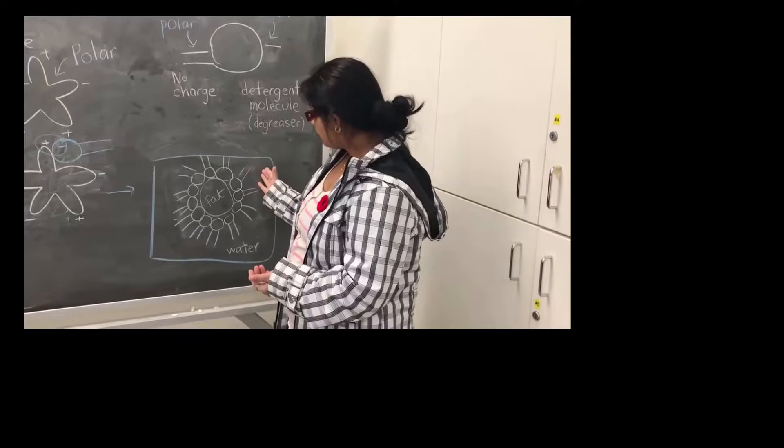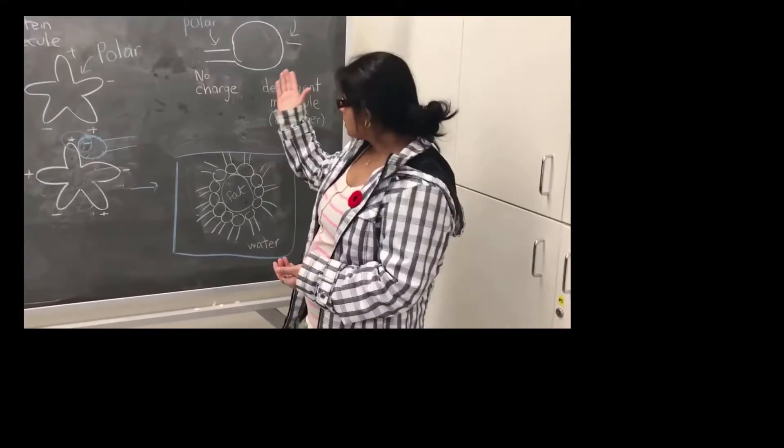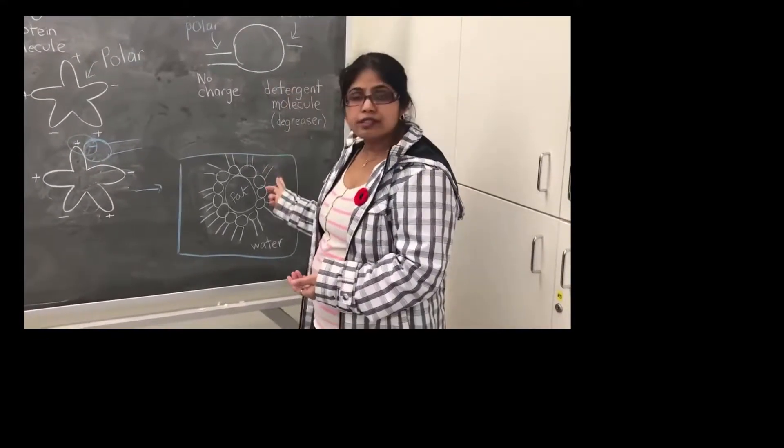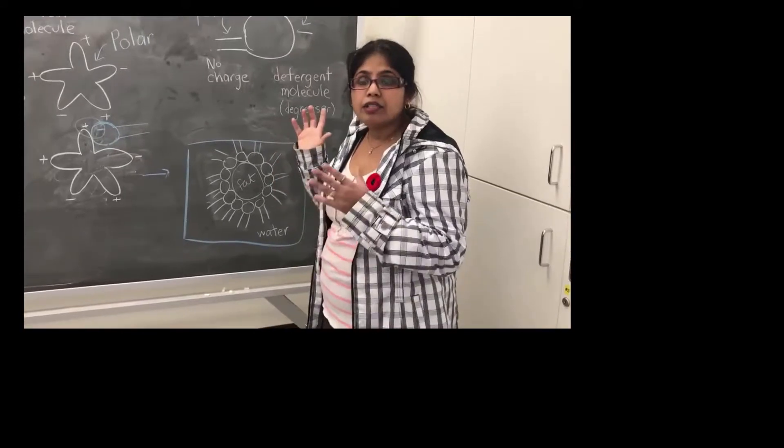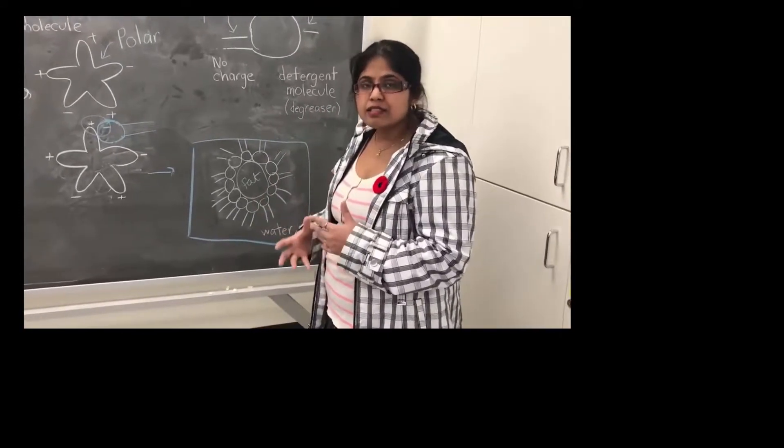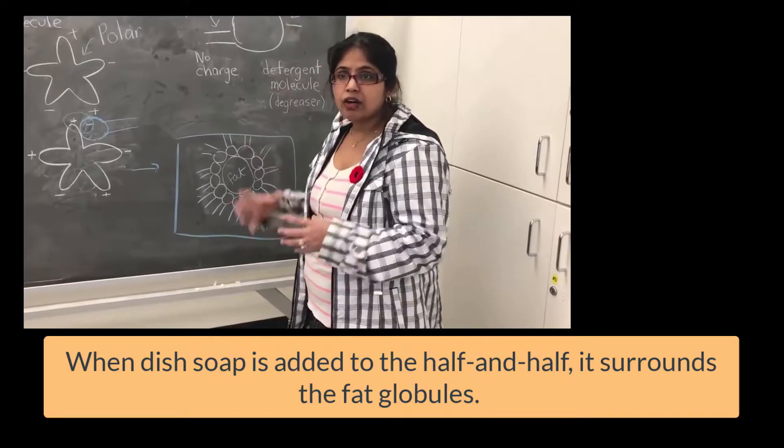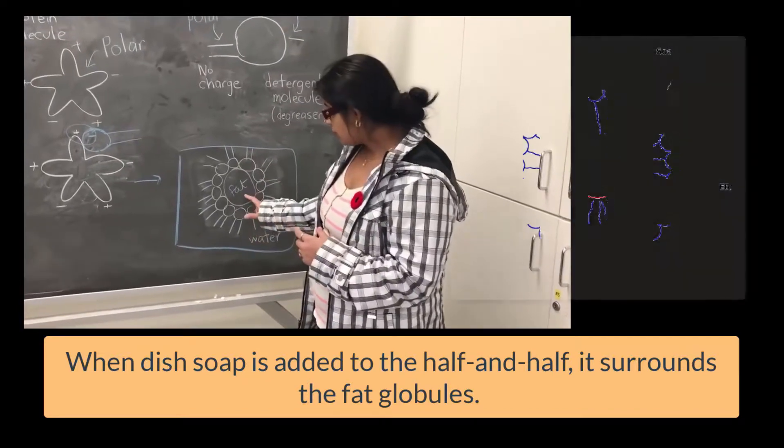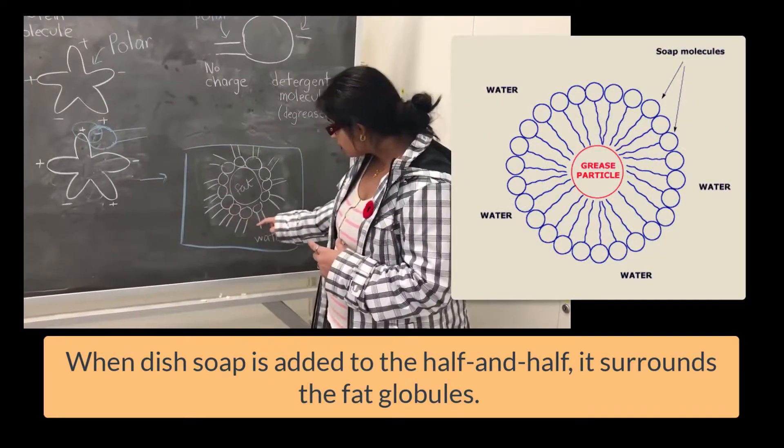So what happened when we put the detergent molecule on the surface of the milk? The detergent molecules act as a degreaser and it attacks or attracts the fat molecules and it covers the surface of fat molecules.